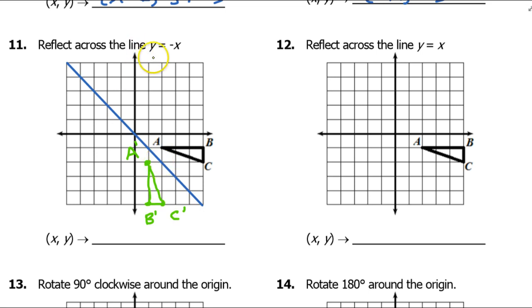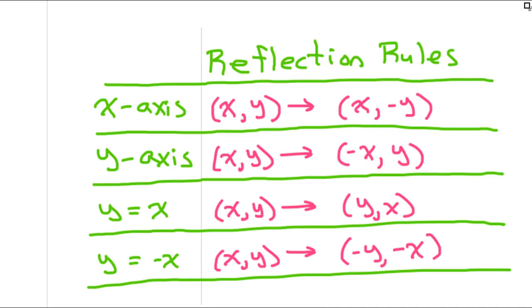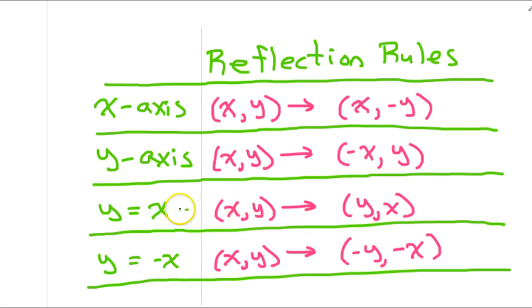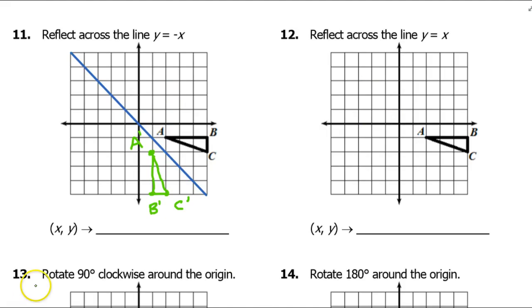What we memorized is: when we deal with reflections over the line y equals negative x, the x and y coordinates switch places and change signs. Commit this entire chart to memory. When you have coordinates, this is really what you want to use; when you have a graph, it's usually easier to just count. If y equals x is the reflection line, all you do is change the order. But if y equals negative x is the reflection line, you change the order and change the signs — that's what's happening here: negative y, negative x.